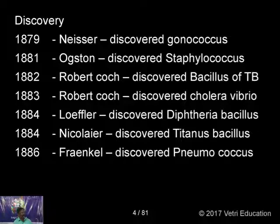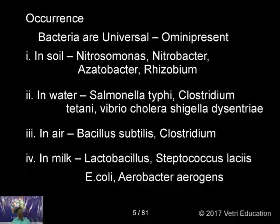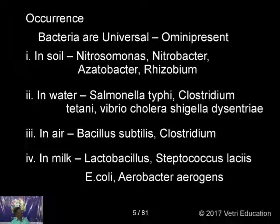In 1886, Fraenkel discovered pneumococcus bacteria, which causes pneumonia disease — later renamed Diplococcus pneumoniae. Now let us see the occurrence of bacteria. Bacteria is everywhere, so you can call it omnipresent. Important bacteria found in different habitats include: in soil — Nitrosomonas, Nitrobacter, Agrobacterium, Rhizobium — these increase soil fertility.